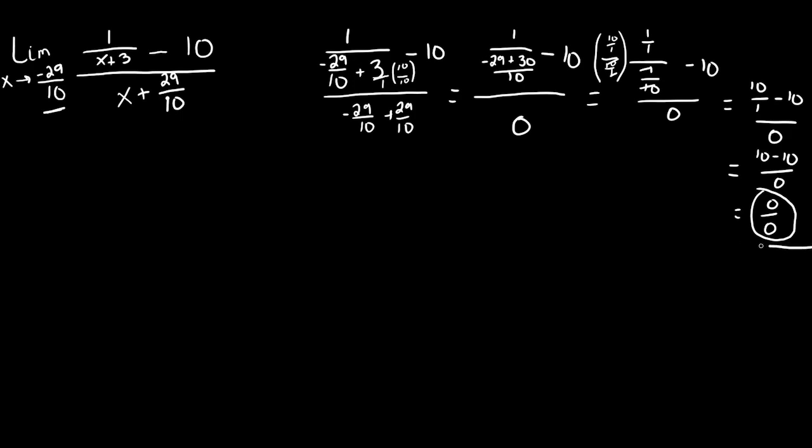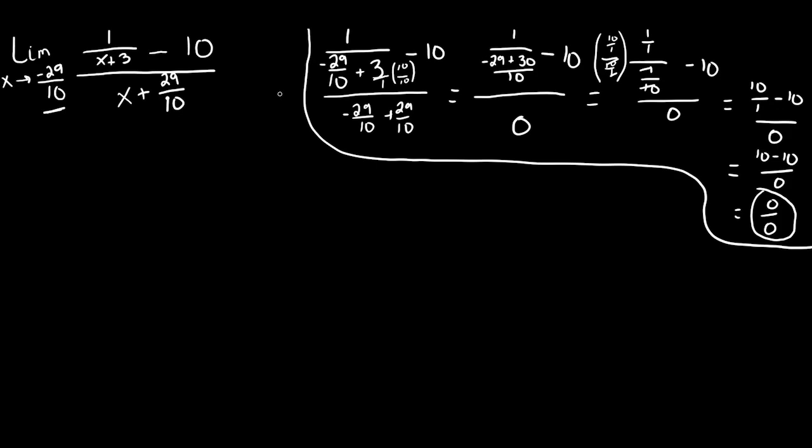So what I'm going to do is leave this sectioned off to give us more room to work. Once we find an indeterminate form like this, we're going to need to go back to the original function and see if there's anything we can do to make our limit not be an indeterminate form. Normally we factor if we have polynomials, or multiply by a conjugate if we have a radical. But in this case, we don't have either of those things.